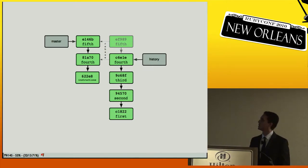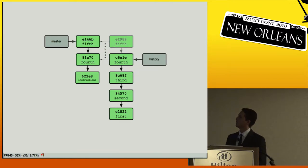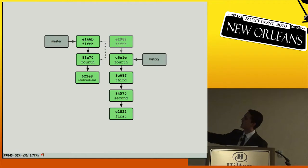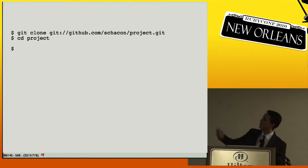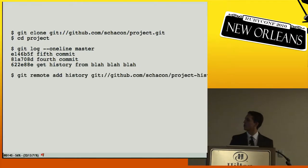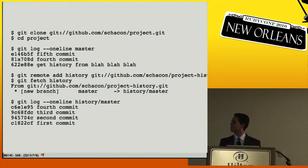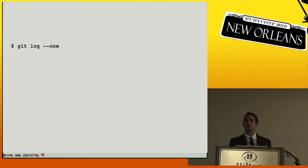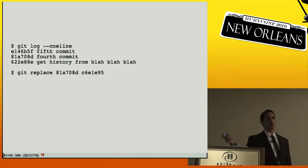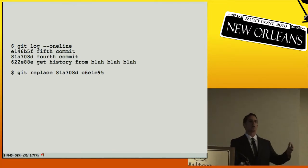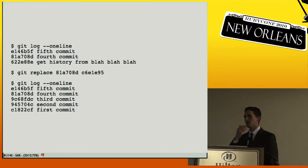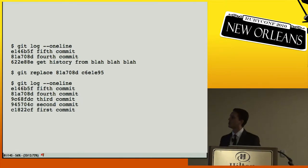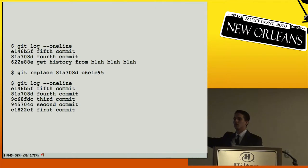When someone clones and sees instructions at the end, they follow them by adding a remote called 'history' and pulling from it. They then use `git replace` to graft the histories together — replacing, say, SHA `81a7` with the last commit in the history version. Then `git log` shows everything grafted together as one long history. One external project is apparently considering this approach as their history is getting large.